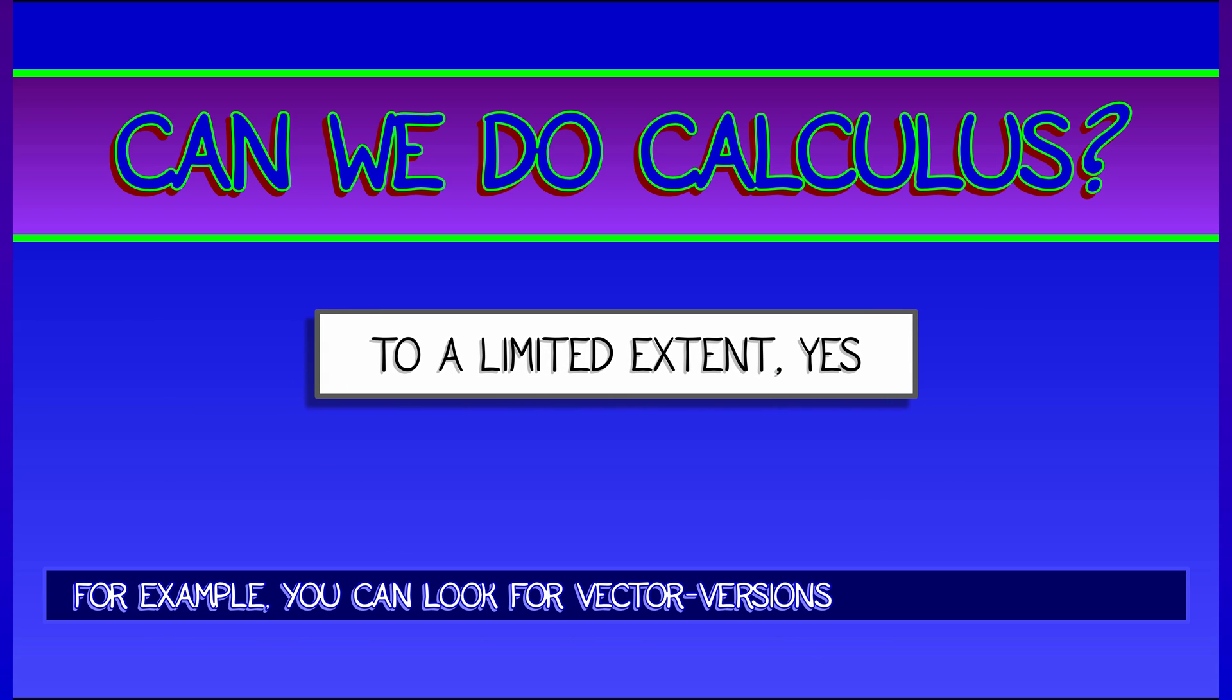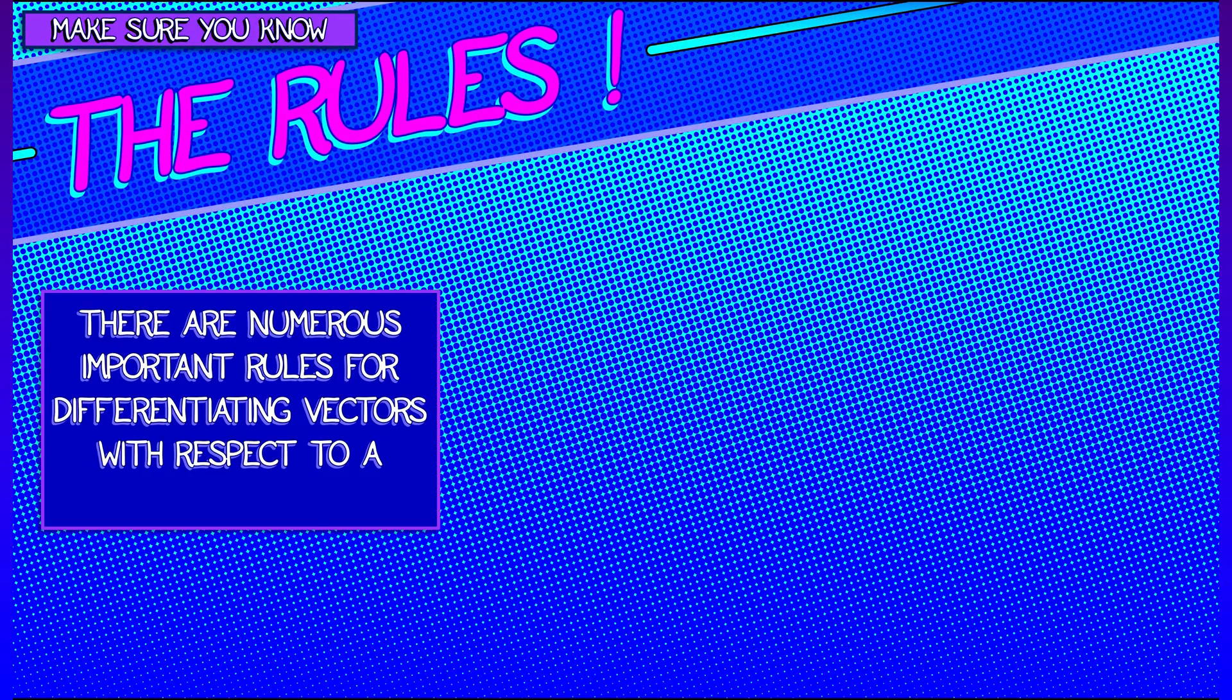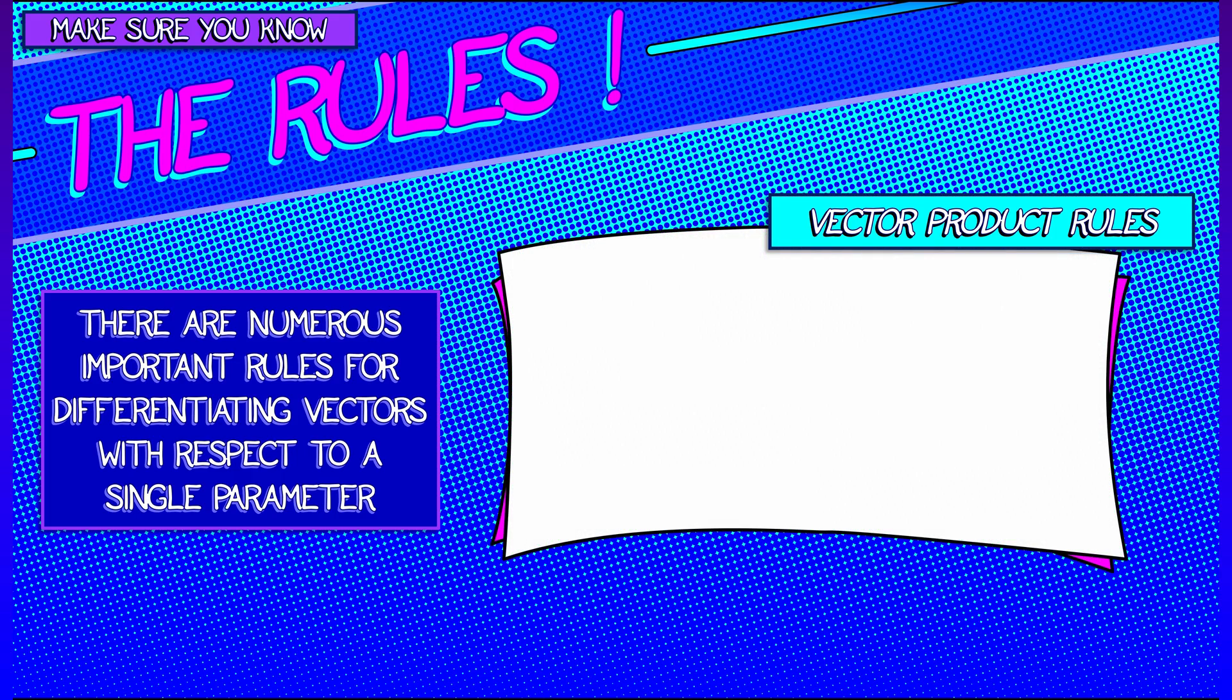Let's look at some derivative rules for vector-valued functions of a single parameter. Maybe you would be able to come up with the following rules on your own. Let's say we have two time-dependent vector functions, u of t and v of t. So u and v are vectors for each time t.